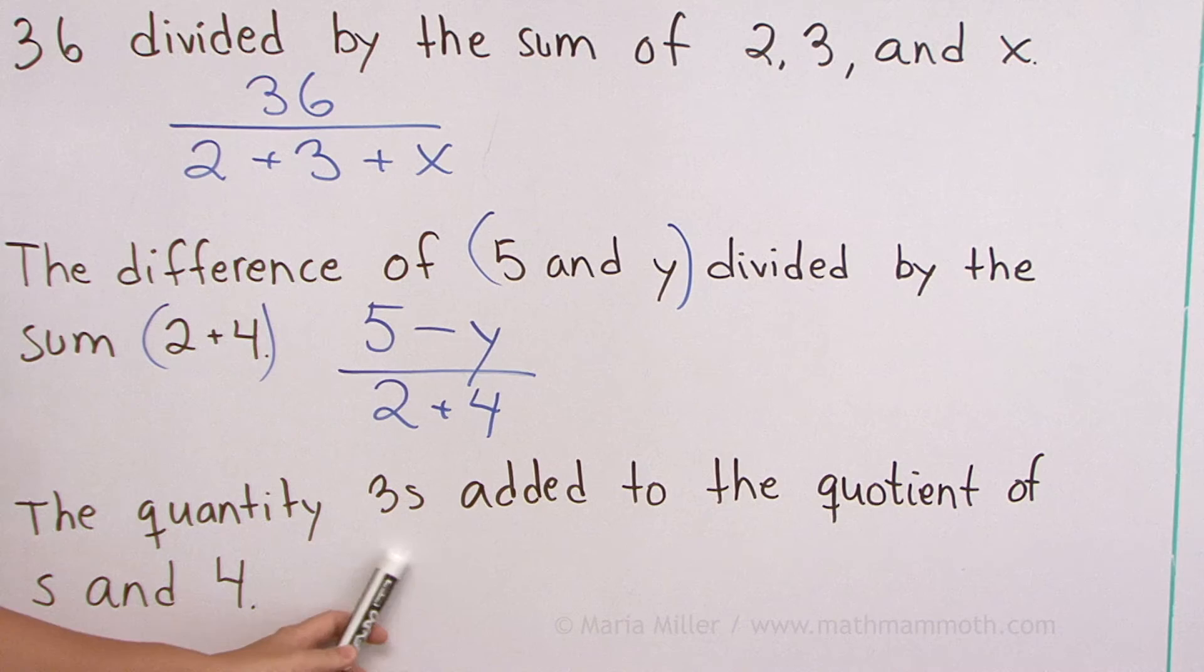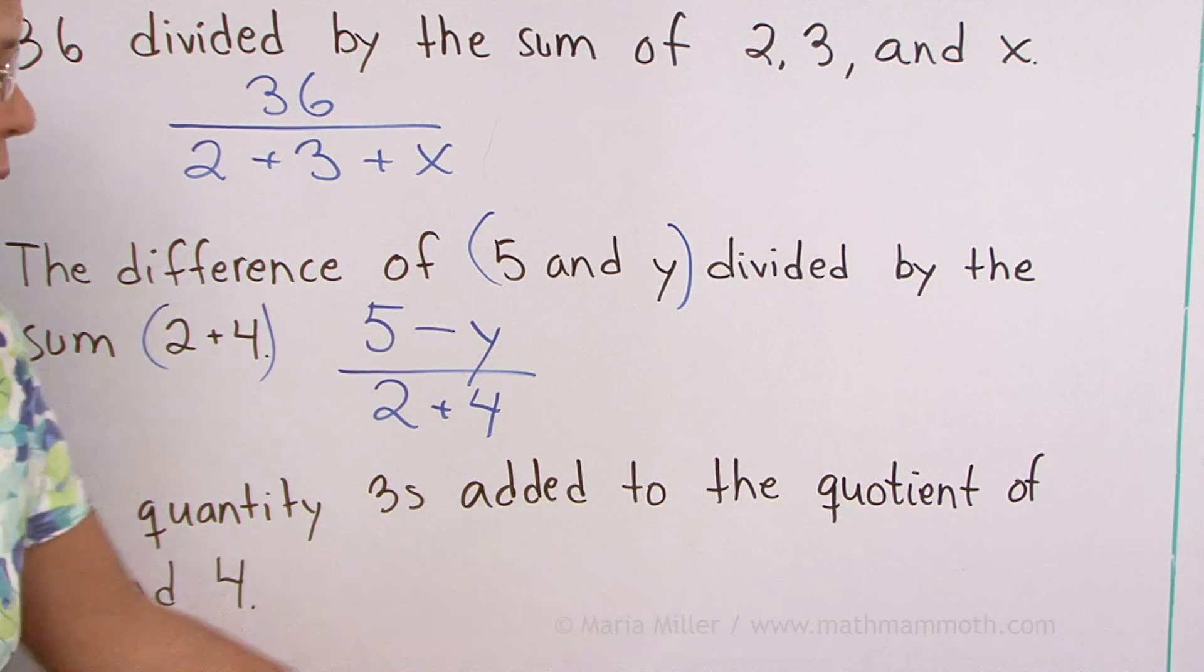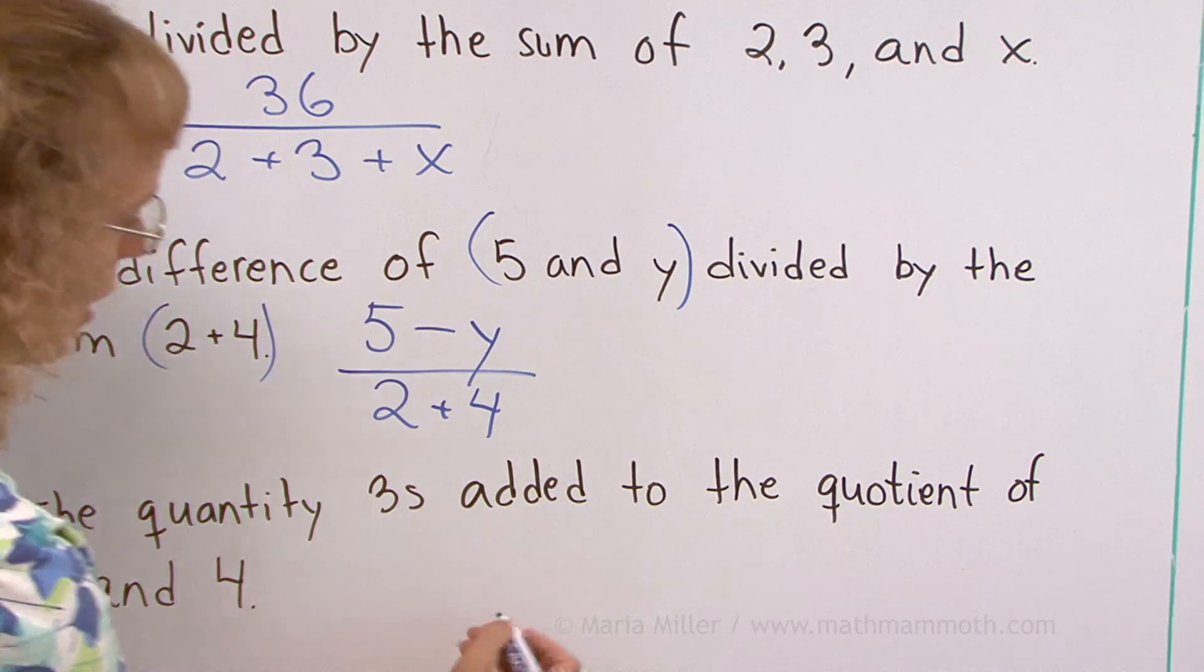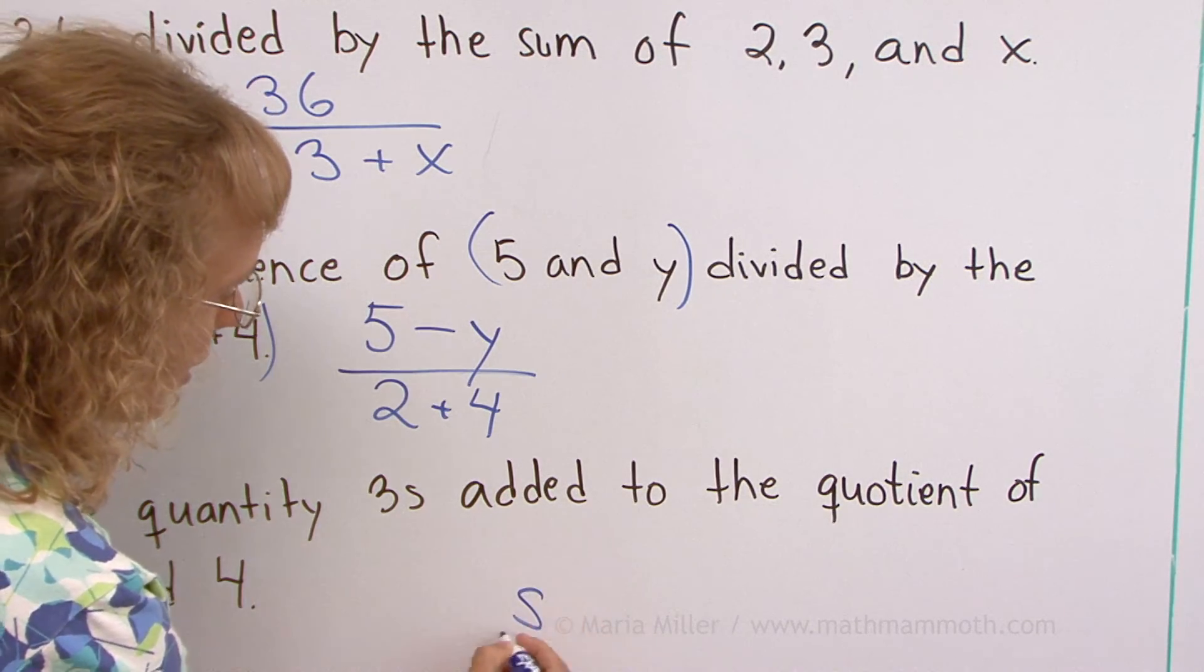And lastly, the quantity 3s added to the quotient of s and 4. Okay. There's addition. And then there's the quotient of s and 4. The quotient of s and 4 would be s divided by 4.